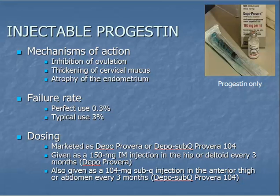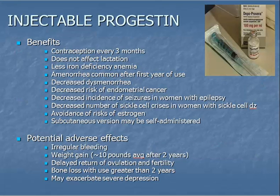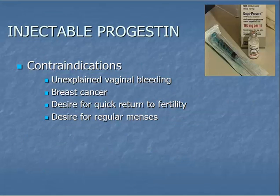The injectable progestin is a progestin-only contraceptive administered under the trade name Depo-Provera as an intramuscular injection given by a health care provider every three months, or as a subcutaneous injection called Depo-sub-Q-Provera 104 given by the patient herself every three months. Mechanisms of action, failure rate, and dosing are listed here. Benefits and potential adverse effects are listed here. Weight gain, delayed return to fertility, and irregular menses are most common with this method. Bone loss may also occur after two years of use; however, to date this effect has been shown to be reversible. There are no data about fracture risk for the patient later in life. Contraindications to the use of the injectable progestin are listed here.